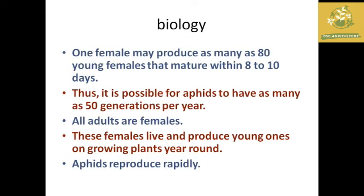Regarding the biology of aphid, a female can produce up to 80 young in 8 to 10 days. There are possibilities of up to 9 generations.